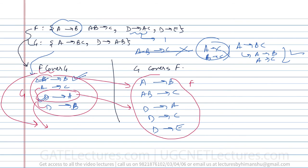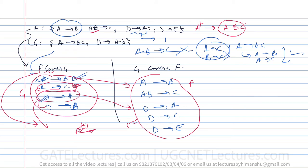Now let us check if G covers F. We need to find anything in F not covered in G. AB→C: taking AB-closure in G, with A and B we can identify C, so this is covered. D→AC: taking D-closure in G gives D, A, B and with A we can get C, so D→C is also covered.